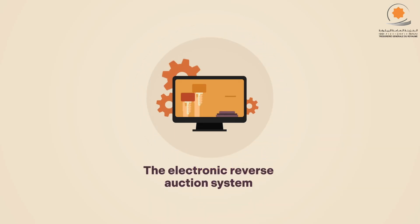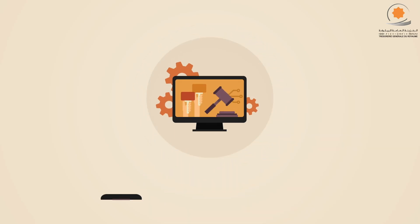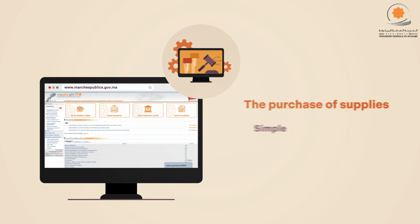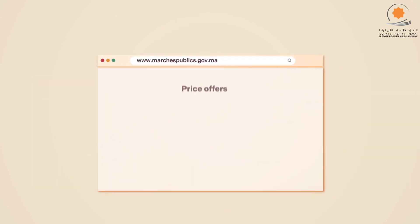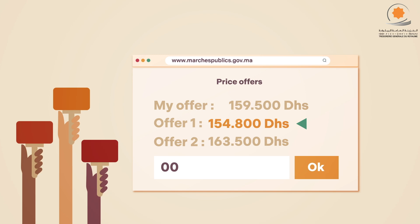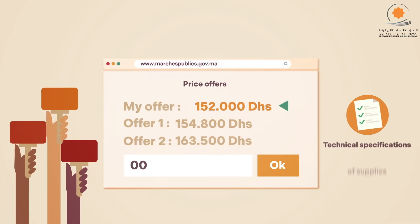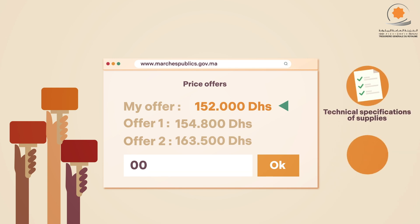The Electronic Reverse Auction System is an innovation of the Public Procurement Portal. It simplifies and streamlines the purchase of supplies. This system allows competing bidders to revise their proposed prices downwards in real time while complying with the technical specifications of the supplies to be acquired within the time limit set for the auction.